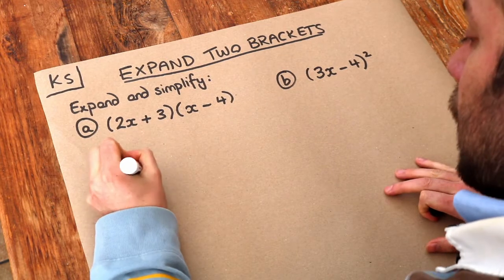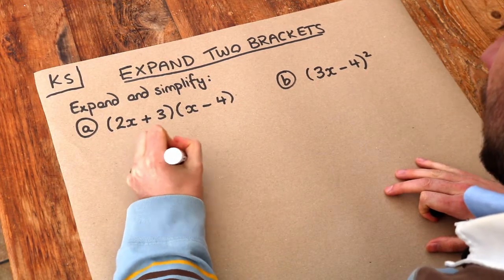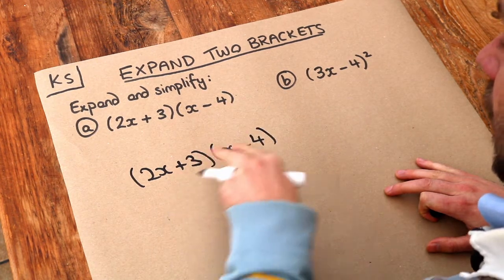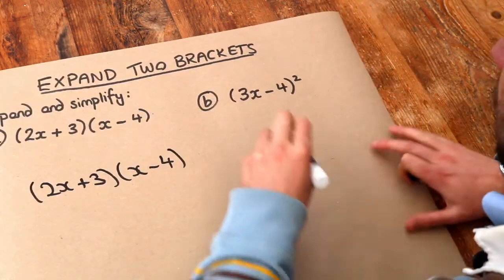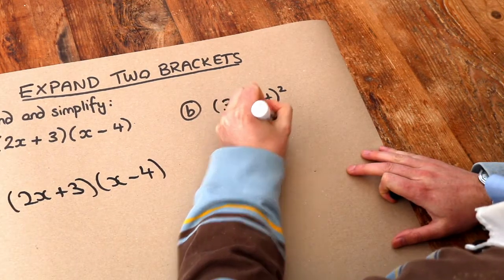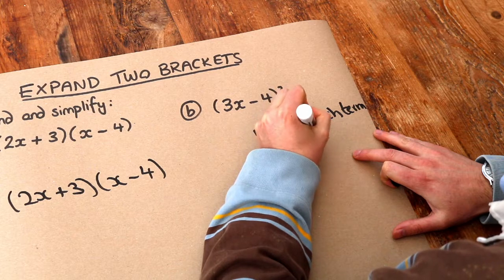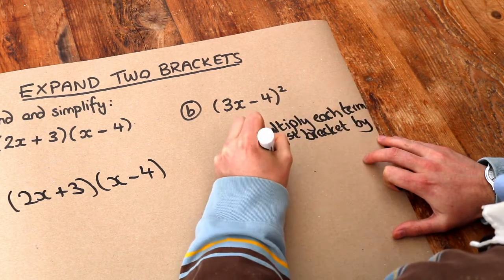Now remember from the first video on expanding two brackets that we said that we want to multiply each thing in the first bracket by each thing in the second bracket. Let me just write that again. So multiply each thing or each term in the first bracket by each term in the second.